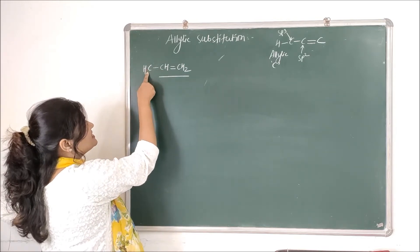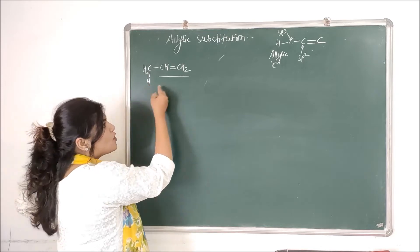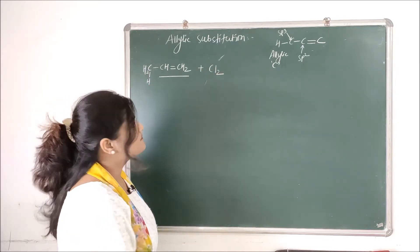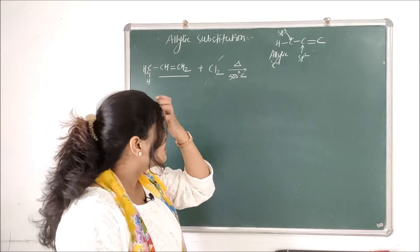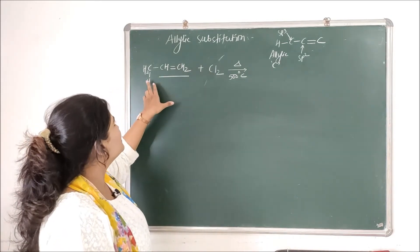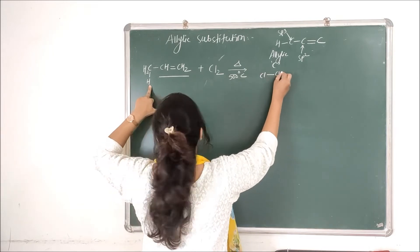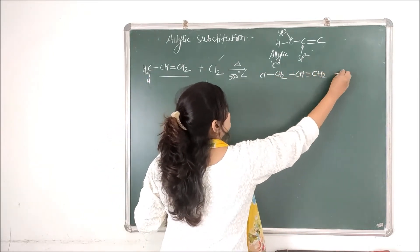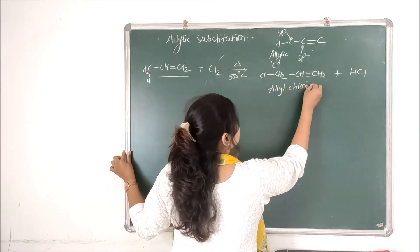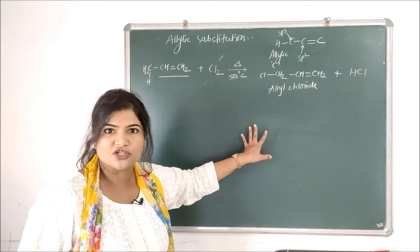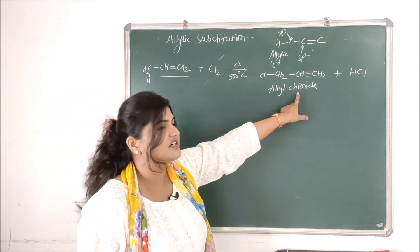This carbon also bears hydrogen — I will write it as CH₂H — so this hydrogen becomes my allylic hydrogen. Now I will be treating it with a halogen atom in the presence of high heat, around 500 to 600 degrees Celsius. The chlorine atom will substitute this hydrogen, and what we get is ClCH₂CH=CH₂ plus HCl. This product is nothing but allyl chloride. So this is allylic substitution.